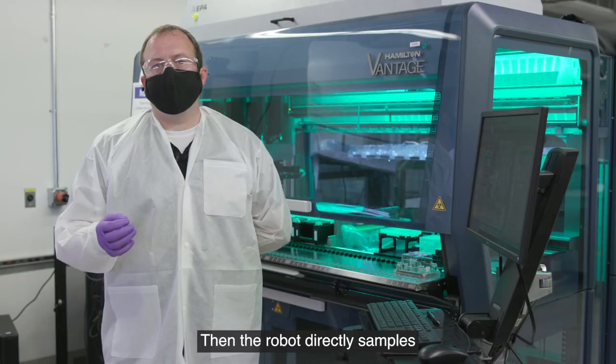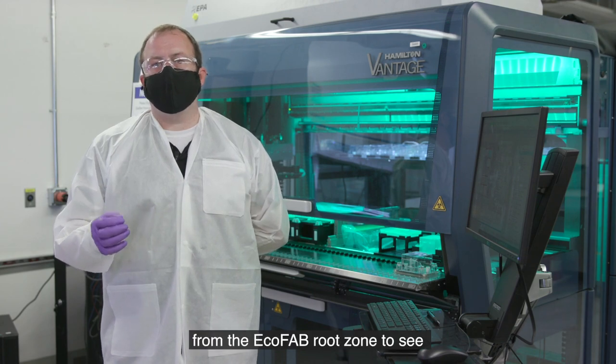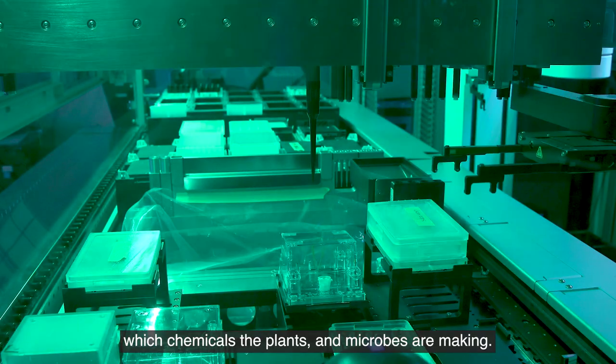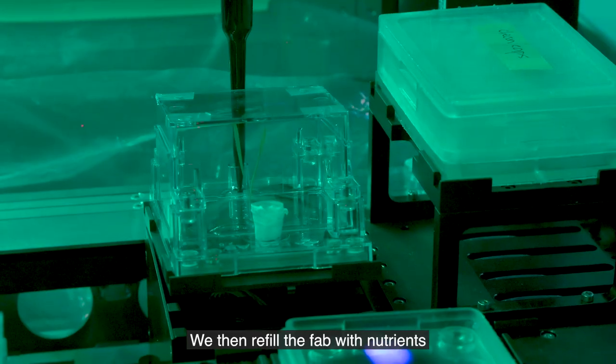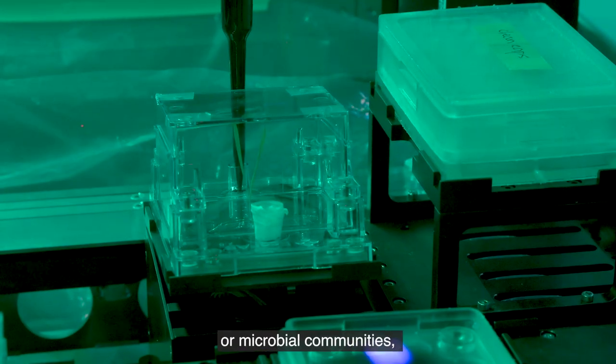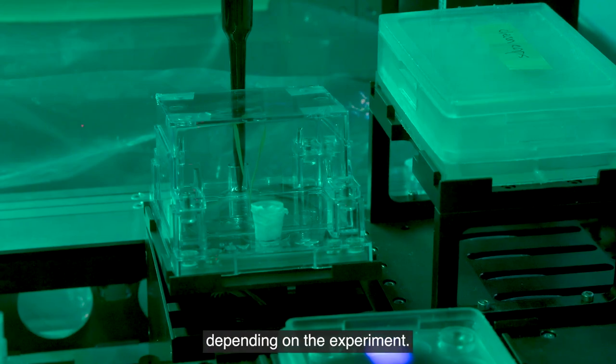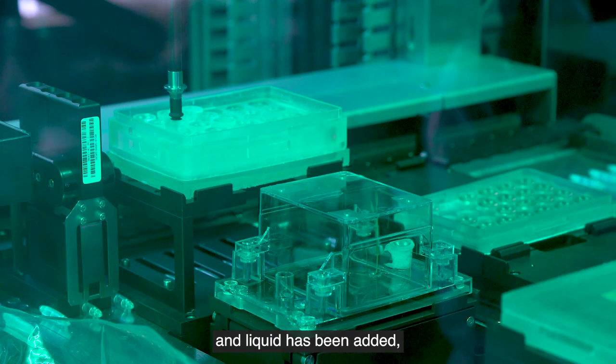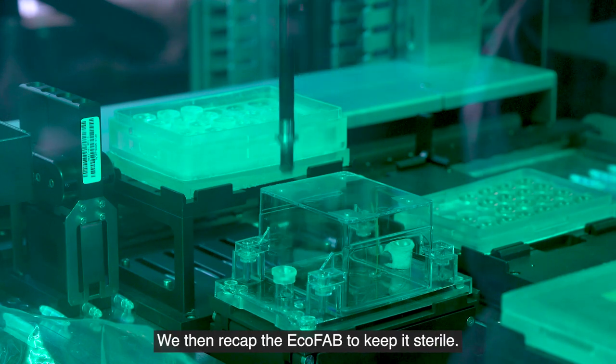Then the ECOBOT directly samples from the ECOFAB root zone to see which chemicals the plants and microbes are making. We then refill the ECOFAB with nutrients or microbial communities depending on the experiment. Once the sample has been removed and liquid has been added, we recap the ECOFAB to keep it sterile.